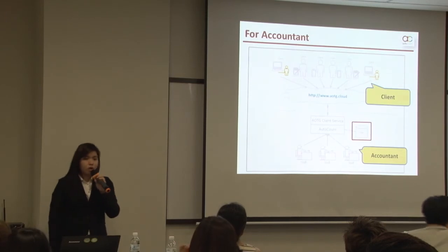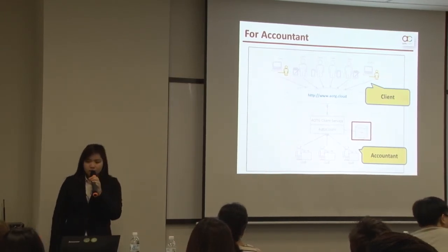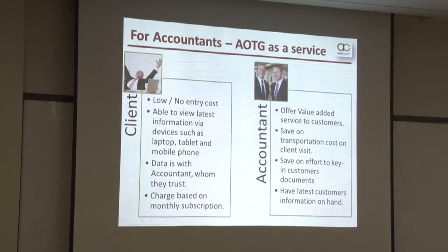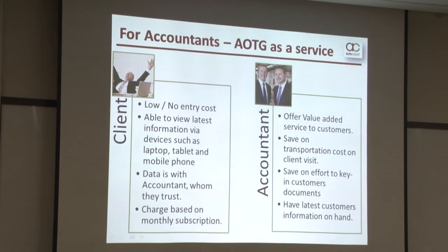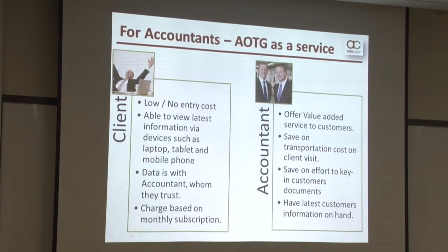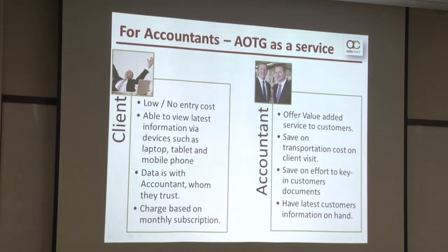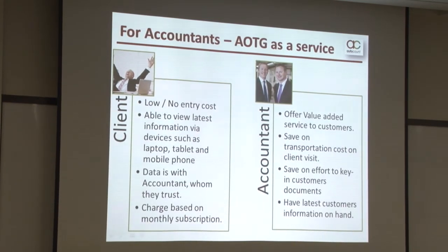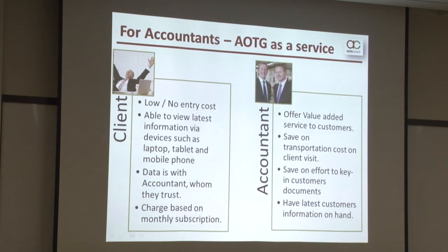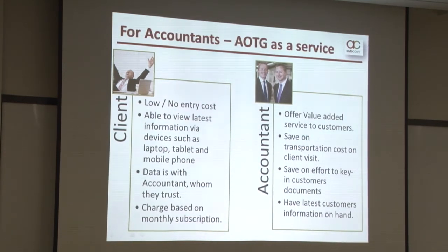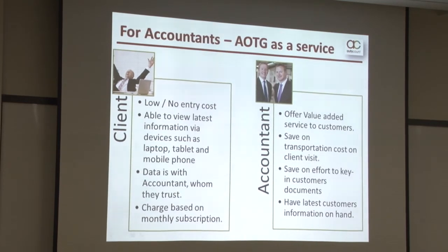This diagram shows that clients may log in to AOTG to access the AutoCount Accounting database hosted by the accountants. The accountant may offer AOTG as part of their accounting service and charge it in a lump sum periodically. Since the data is hosted at the accountant's place, they will have the most updated information and accounting reports, because whatever sales and purchases transactions the clients perform will be updated automatically into the database.